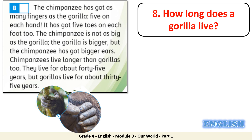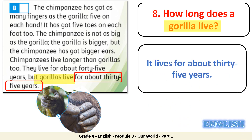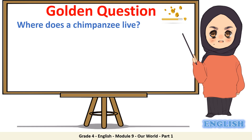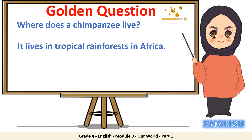Question 8: how long does a gorilla live? Let's highlight the keyword: gorilla live. It lives for about 35 years. Well done! Question time: where does a chimpanzee live? It lives in tropical rainforests in Africa.